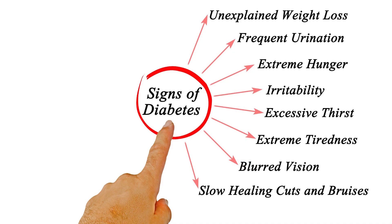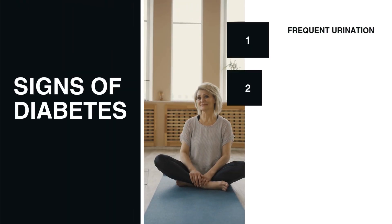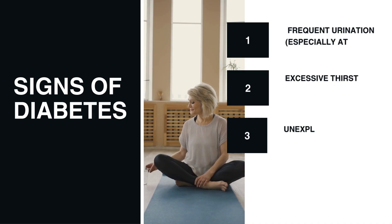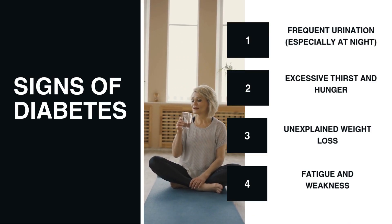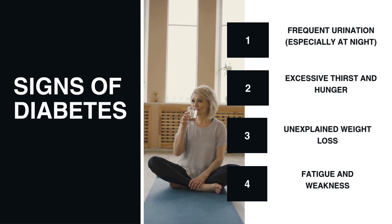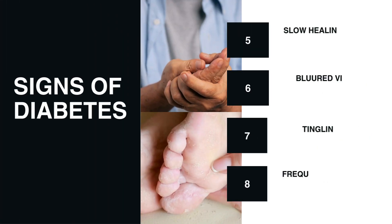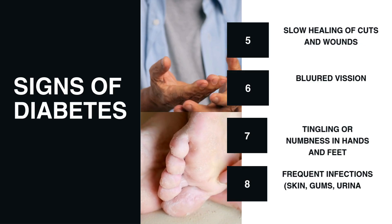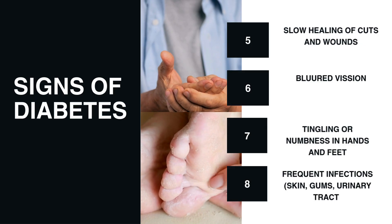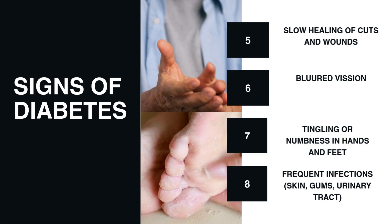Common symptoms of diabetes include frequent urination especially at night, excessive thirst and hunger, unexplained weight loss, fatigue and weakness, slow healing of cuts and wounds, blurred vision, tingling or numbness in hands and feet, and frequent infections of the skin, gums, and urinary tract.